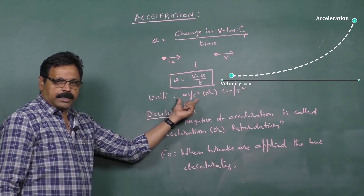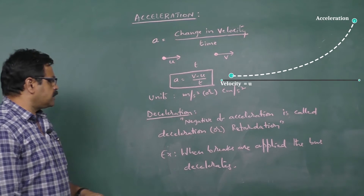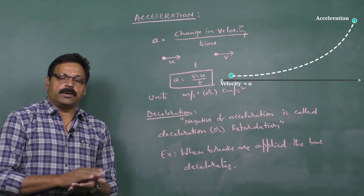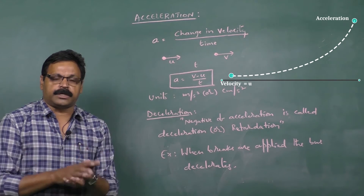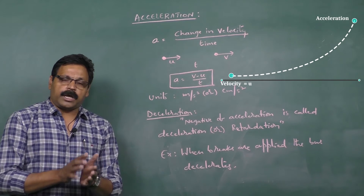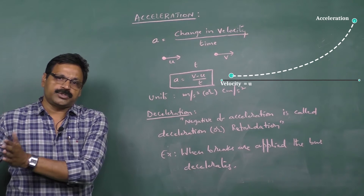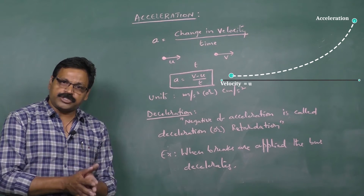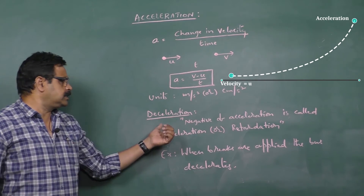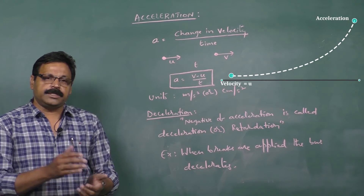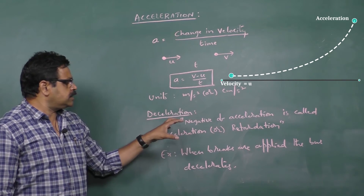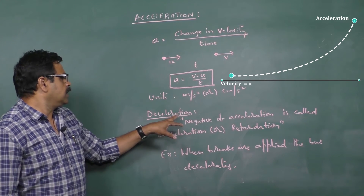The SI or MKS system takes meter per second square as the unit for acceleration. When accelerating, velocity keeps increasing. However, if a body is moving with some initial velocity and you want to stop it, you apply the brakes. When brakes are applied, the initial velocity decreases gradually until the body comes to a halt, meaning the final velocity is less than the initial velocity, so the acceleration takes a negative sign.